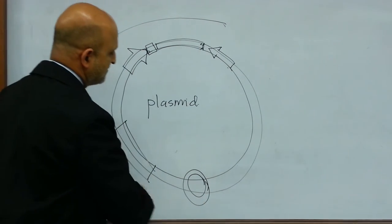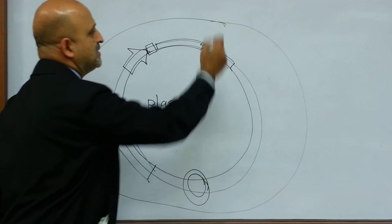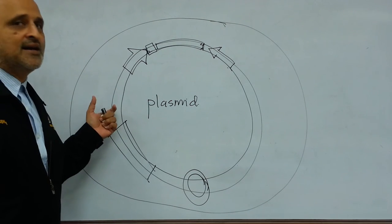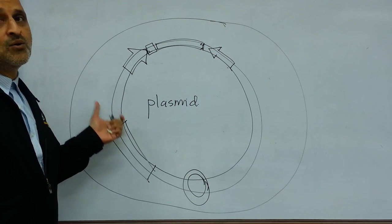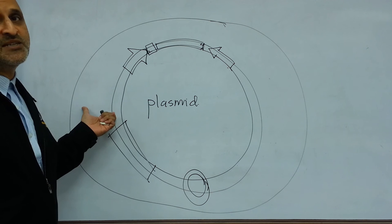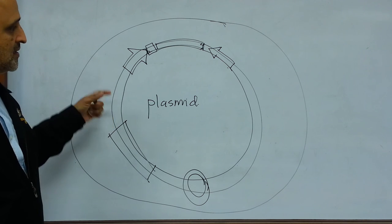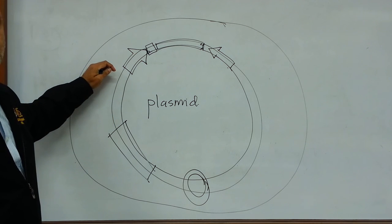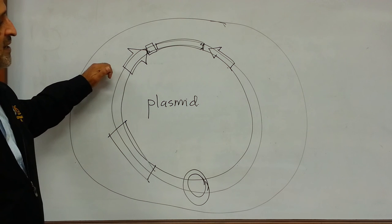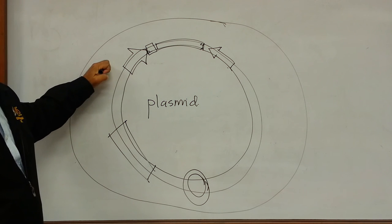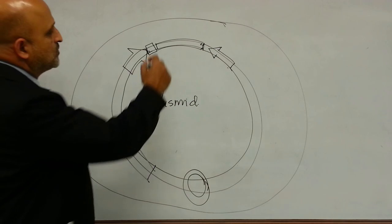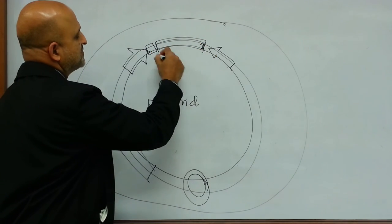This plasmid is then transformed into E. coli using electroporation or using chemical transformation methods. Upon transformation into the host, this bacterium will express the protein, which is encoded by this specific gene.